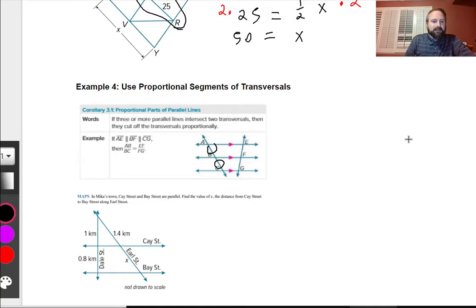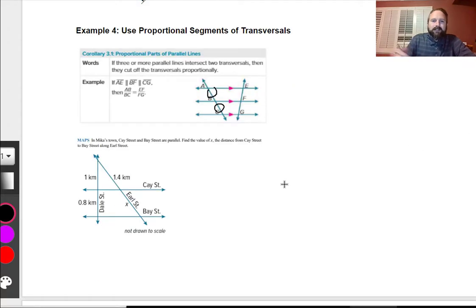Let's go on. I like this example right here, because we can pretend saying, hey, look, there's this pretend third line right here that's going to be proportional right here. So in Mika's town, K Street and Bay Street are parallel. Find the value of X, the distance from K Street to Bay Street along Earl Street. Well, they're asking, what's this? Well, knowing this, I can write this as a proportion. We have this third parallel line right here. It's like an invisible parallel line. It's a point. They all meet at this one point. That's okay. So I'm going to write this. I want X on the top. So I'm going to put X over 1.4 kilometer is equal to 1 kilometer over 0.8 kilometer.